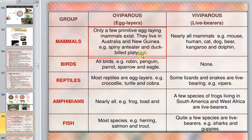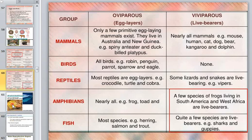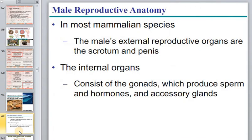Even in amphibians, some can be viviparous and give birth to live young, and even fish — sharks for example. Sharks are very interesting; I'll leave links to videos about sharks. Some sharks even eat their siblings inside the mother's body — it's very dangerous.